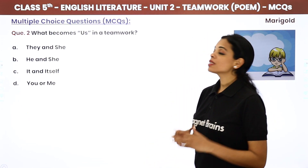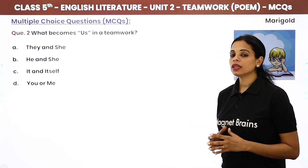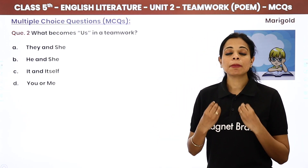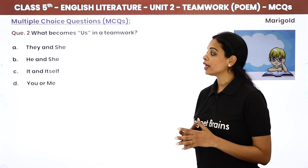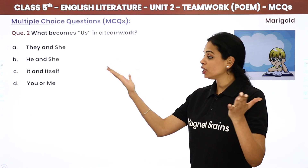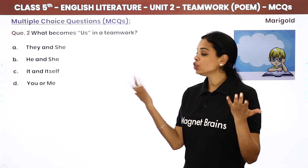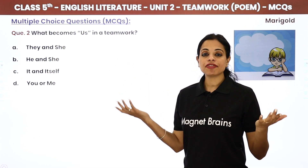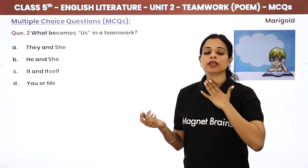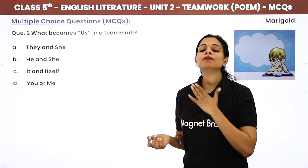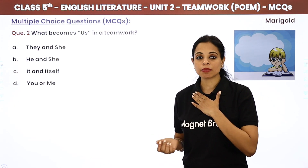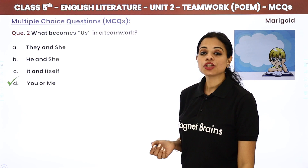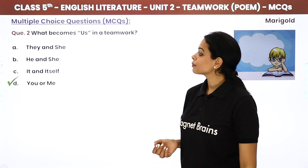Second question: What becomes 'Us' in Teamwork? In teamwork, 'Us' means 'hum' — what are we? Options are They and She, He and She, It and Itself, or You and Me. You and Me together make Us. The answer is You and Me.